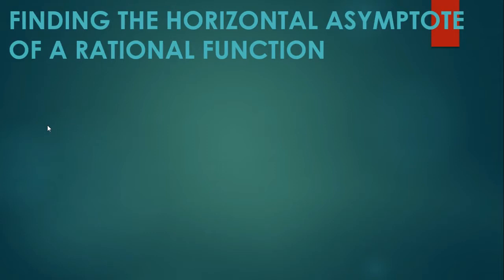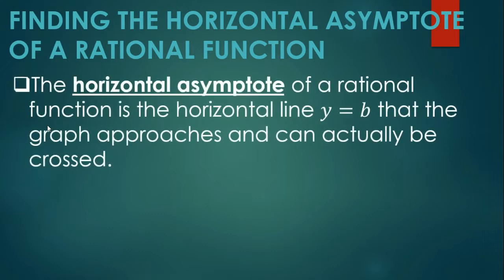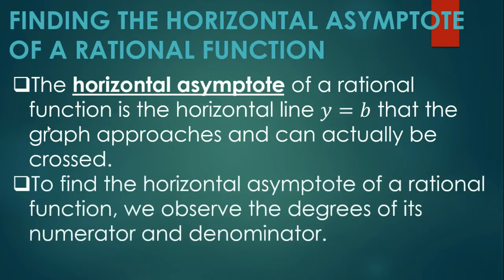Let's proceed to the second type of asymptote, which is the horizontal asymptote. The horizontal asymptote of a rational function is the horizontal line y is equal to b that the graph approaches and can actually be crossed. To find the horizontal asymptote of a rational function, we observe the degrees of its numerator and denominator.